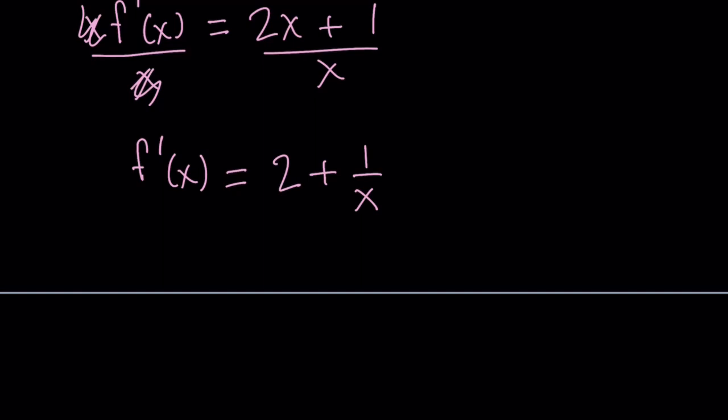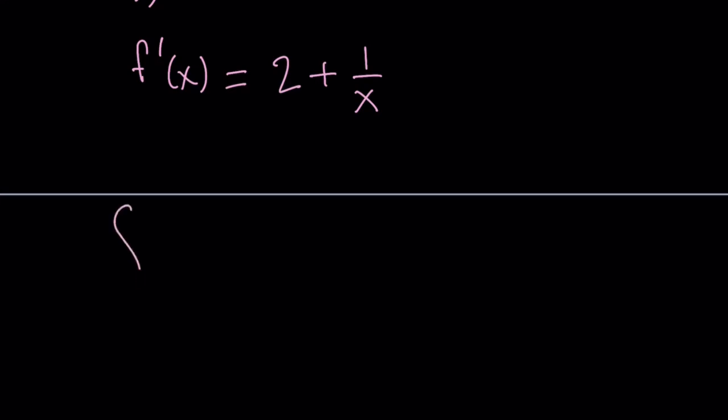Now if we integrate both sides, we're going to find f of x. In other words, if you integrate f prime of x dx, which is integrating 2 plus 1 over x dx, that is going to give you the value of f plus a constant, of course.